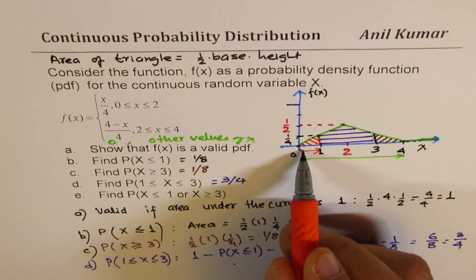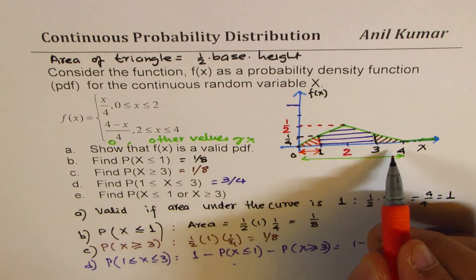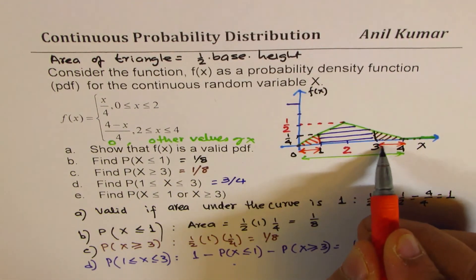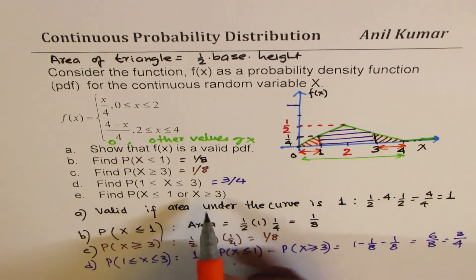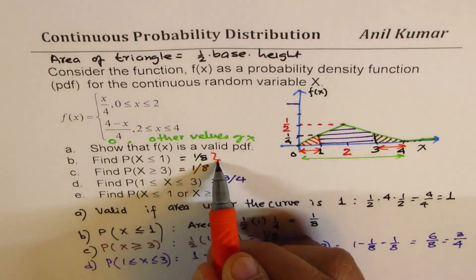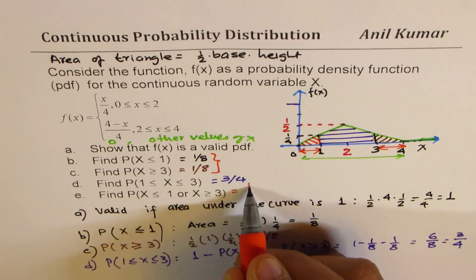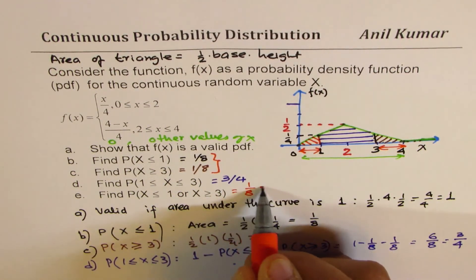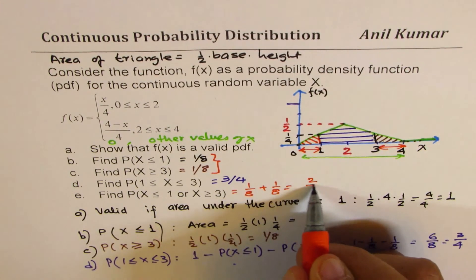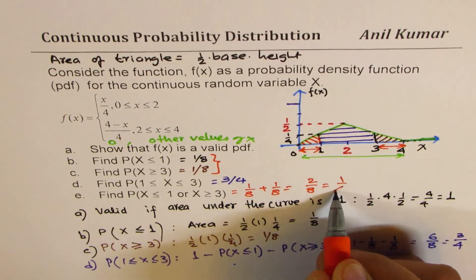The last part is the probability when x < 1 or x > 3 — that means adding the two outer portions. That probability is 1/8 + 1/8 = 2/8 = 1/4.